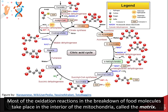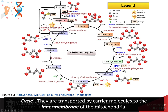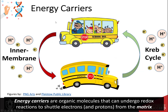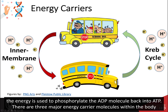Most of the oxidation reactions in the breakdown of food molecules take place in the interior of the mitochondria, called the matrix. The electrons and protons are harvested through the metabolic reactions of the citric acid cycle, or Krebs cycle, and transported by carrier molecules to the inner membrane of the mitochondria, where the energy is used to phosphorylate ADP back into ATP.